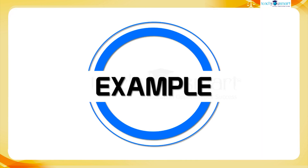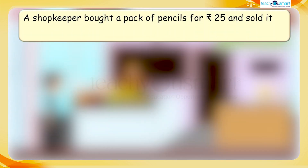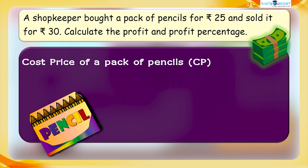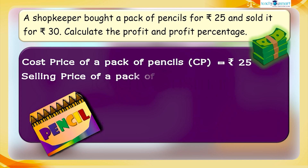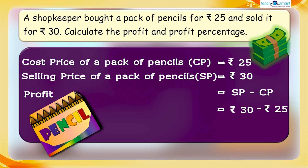Let us do another example. A shopkeeper bought a pack of pencils for rupees 25 and sold it for rupees 30. Calculate the profit and profit percentage. Cost price of a pack of pencils CP equals rupees 25. Selling price SP equals rupees 30. Profit equals SP minus CP, equals rupees 30 minus rupees 25, equals rupees 5.